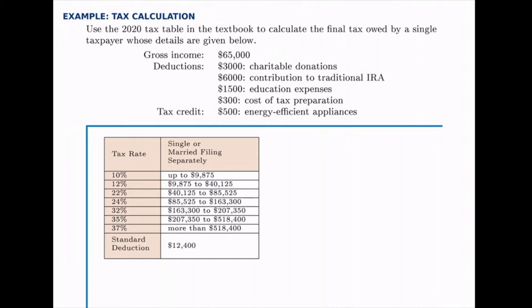and that gives us the taxable income. Then we do like we did in the last example, and divide the money into buckets and calculate the tax owed based on the tax rates given in the tax table. But after we do that, we apply the tax credit. So the deductions are calculated first, then we get the taxable income, then we calculate the tax owed, and then we also remove from that final tax owed any tax credits.